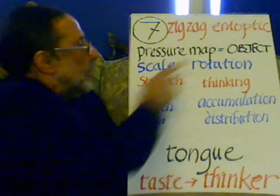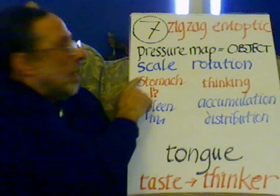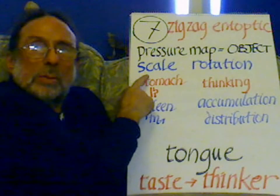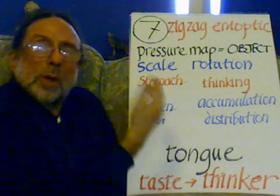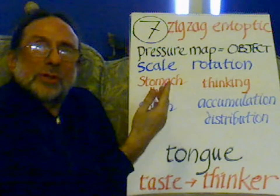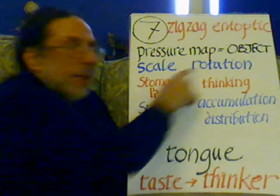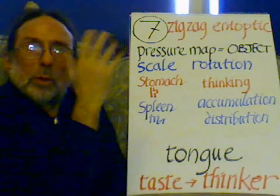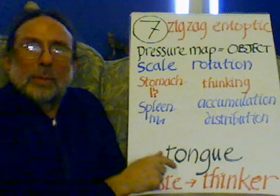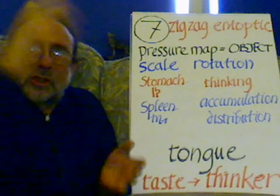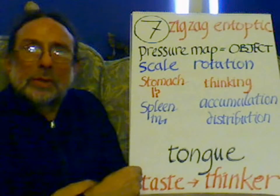Pressure map, and then obviously of this object we've got two ideas, two aspects of it: the scale and the rotation. We can rotate it around in our mind, and we can scale it up and down.